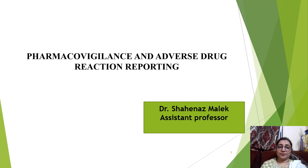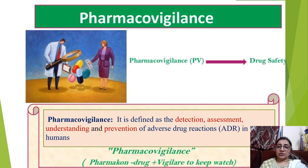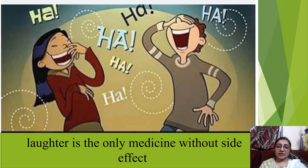Welcome to Pharmacomania. We are going to discuss pharmacovigilance and adverse drug reaction reporting. Pharmacovigilance is the safety of the drug. The definition of pharmacovigilance is detection, assessment, understanding, and prevention of adverse drug reactions in human beings.